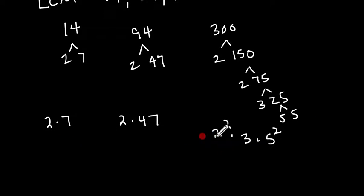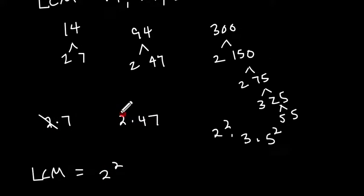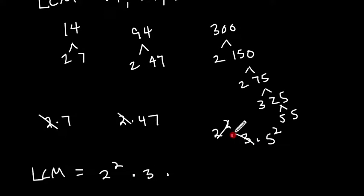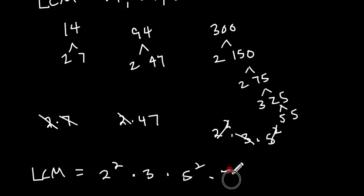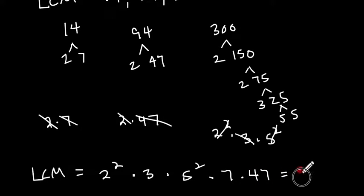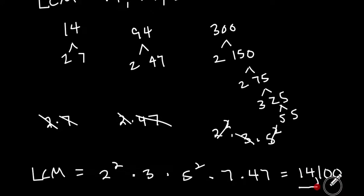Now you're going to take the highest exponent on the 2s and that's going to be your first number in the least common multiple. So the LCM is going to include 2 squared — the highest exponent among the 2s — then cross all the 2s out. Next is a 3, so we put a 3 down. There are no other 3s. Then 5 squared — no other 5s. Then a 7, and finally this big 47, which makes our number really big. If you multiply all that out, our least common multiple is 14,100 — the smallest number that 14, 94, and 300 all divide into.